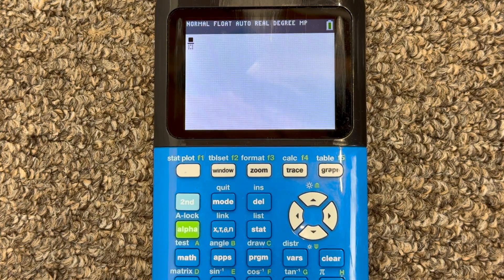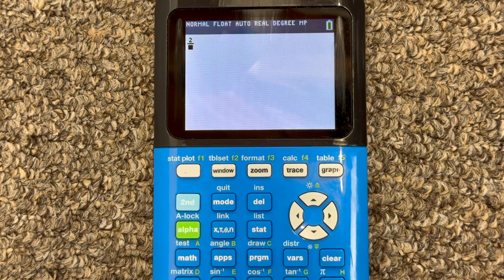And then now we can type our fraction. So I'm going to say two, and I'm going to use the arrow key to get to the denominator, thirds.